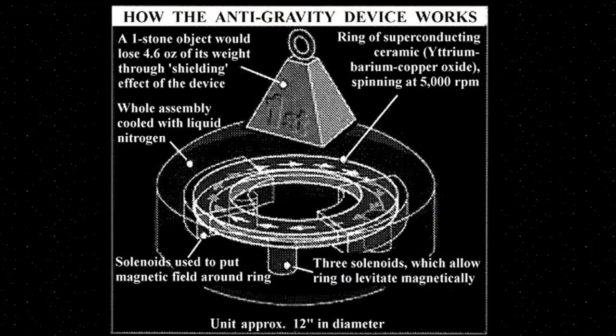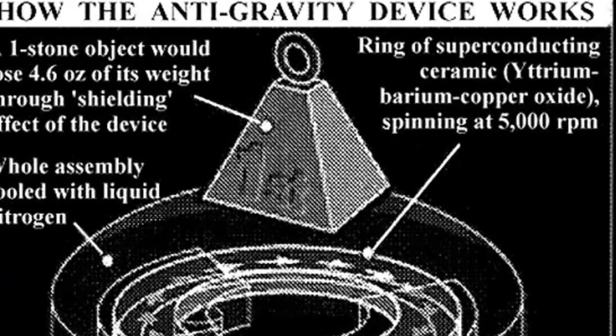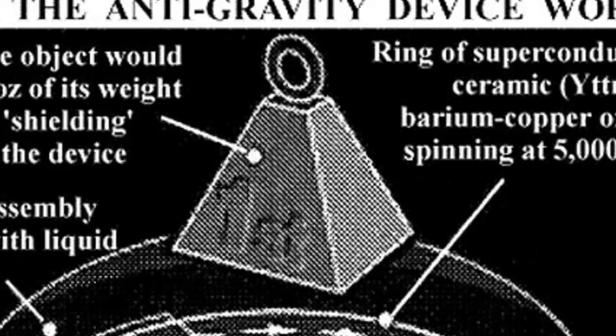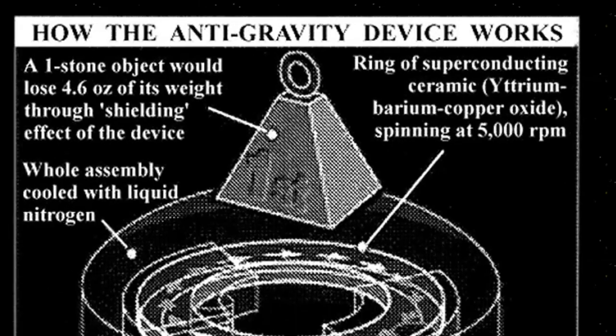In September of 1996, a Finnish physicist by the name of Dr. Eugene Podklanov at the University of Technology in Finland, while working on experiments with superconducting materials, discovered what appeared to be a slight drop in the weight of objects suspended above a rapidly spinning disk of superconducting ceramic. He tested a variety of materials and objects suspended above it. With measurable and consistent effects, he was able to get up to 2% weight loss when a second counter-rotating magnetic field was placed above the first, achieving results similar in nature to those achieved with the Hutchinson effect.